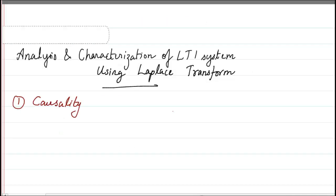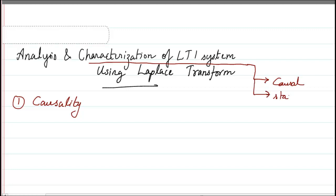Hello students. Next we look into another important topic: the analysis and characterization of LTI systems using Laplace transform. The meaning of characterization of an LTI system is that you can characterize the system to be either a causal or non-causal system, a stable or non-stable system, a system with memory or without memory — there are many other characterizations that can be done using the Laplace transform.